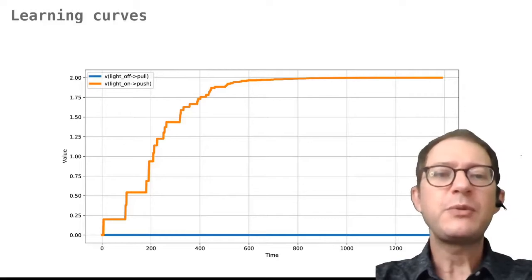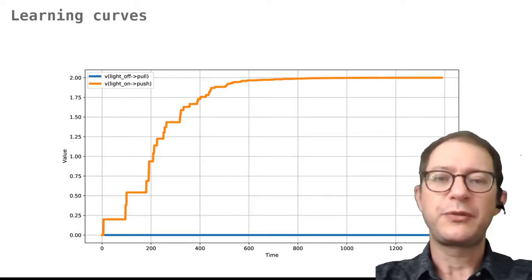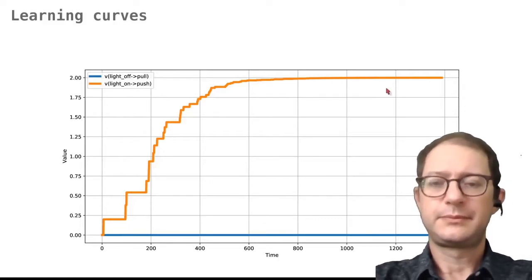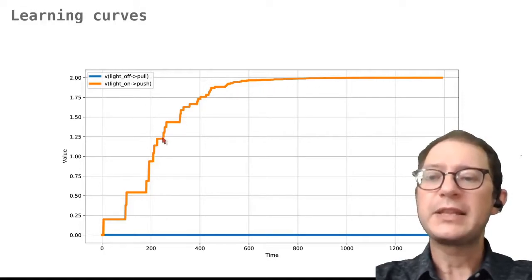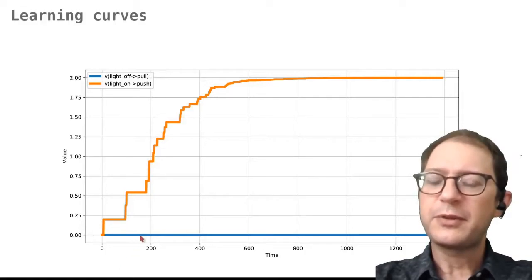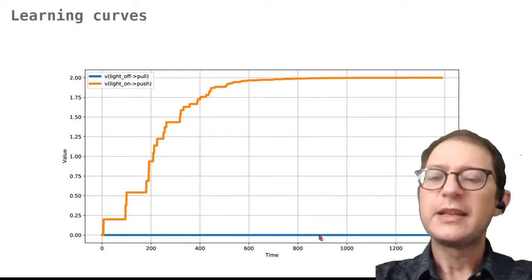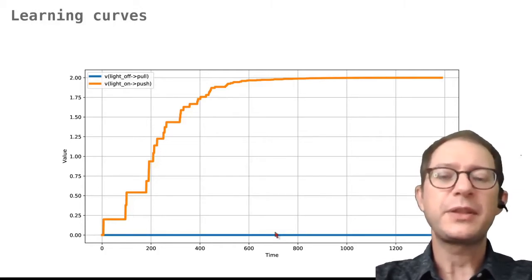This first graph shows what happens without conditioned reinforcement. As you can see, only the second action is learned — pushing while the light is on. The associative strength of the first action, pulling the chain, does not increase at all, because in this model without conditioned reinforcement there is nothing that rewards this action.